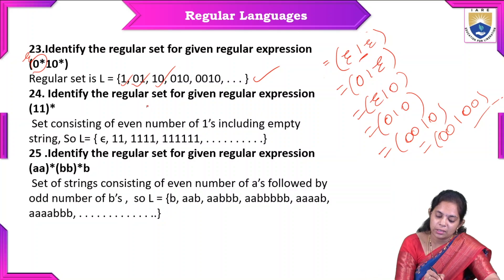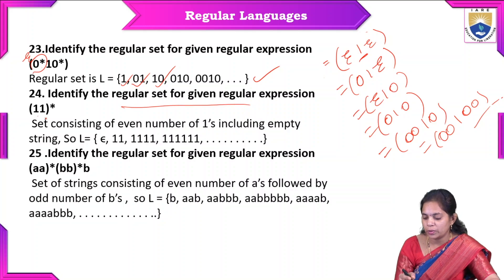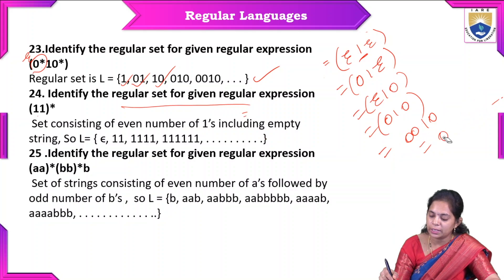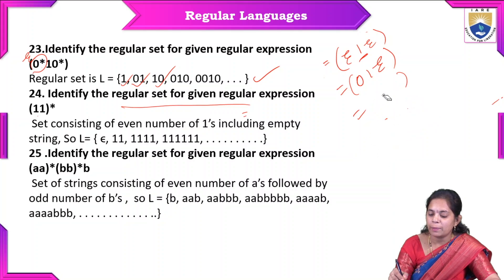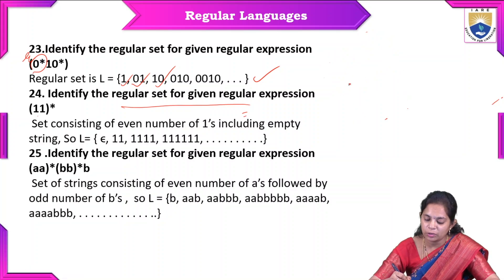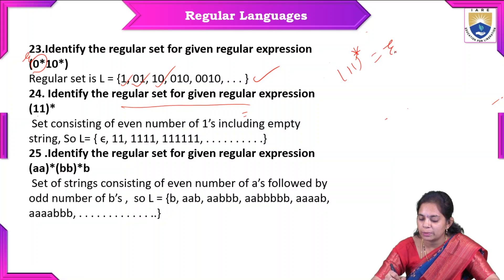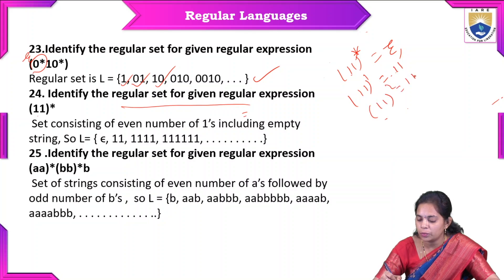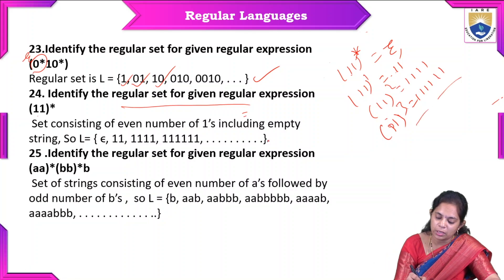Example: identify the regular set for (11)*. Since star appears, we first take the minimum value: (11)^0 = epsilon. Then (11)^1 = 11, (11)^2 = 1111, (11)^3 = 111111, and so on. So the regular set is {epsilon, 11, 1111, 111111, ...} — including the empty string.